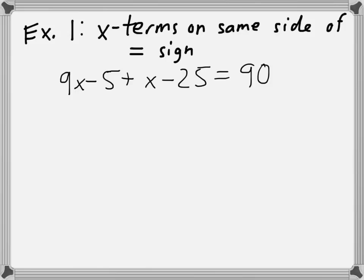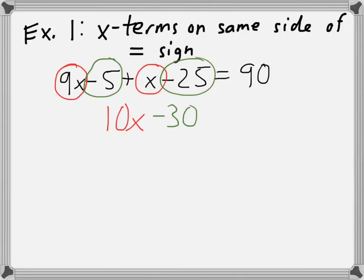So what do we do in this situation? Well, notice that we have a bunch of terms on the left side. We can combine them. The 9x and the x are like terms because they both have an x. The minus 5 and minus 25 are also like terms because they are constants or numbers. I can combine them. 9x plus x gives me 10x. If I combine the minus 5 and minus 25 together, that is minus 30. The 90 stays the same. It didn't change. So this first step is combining like terms.